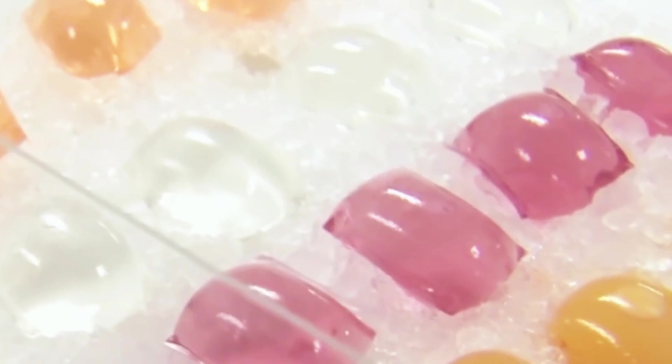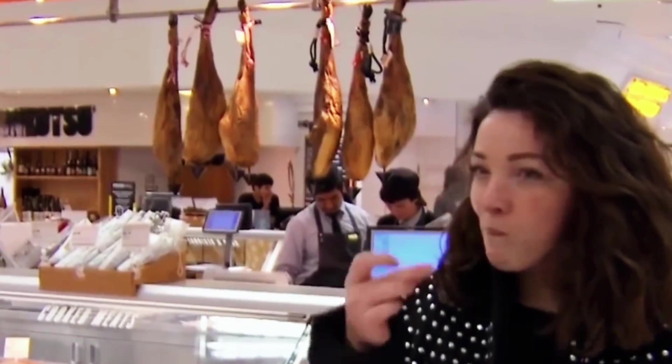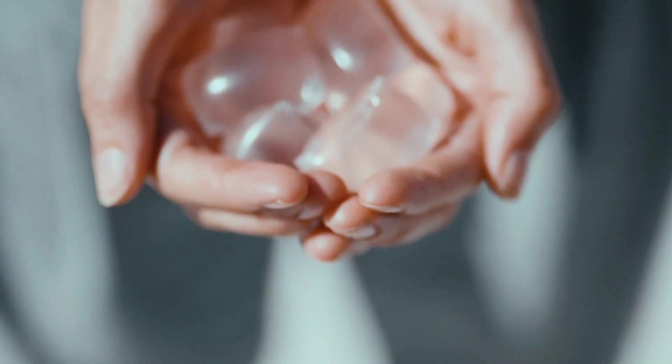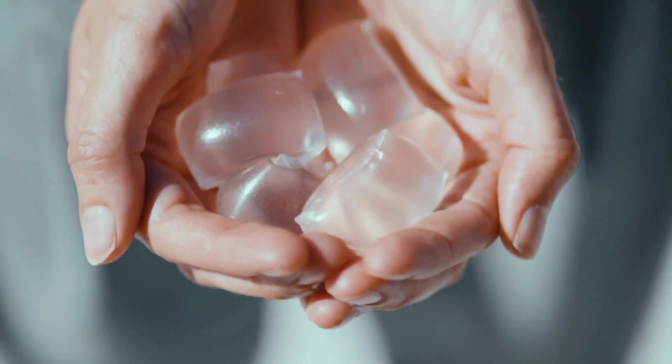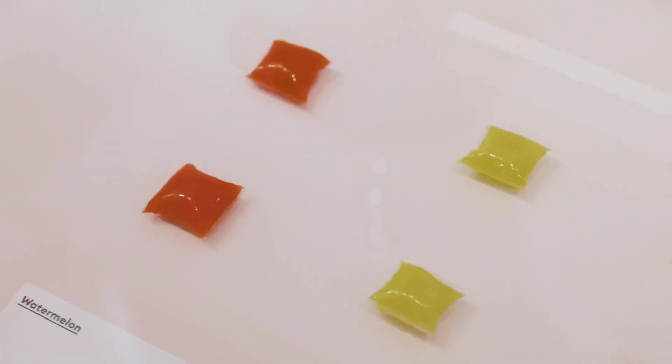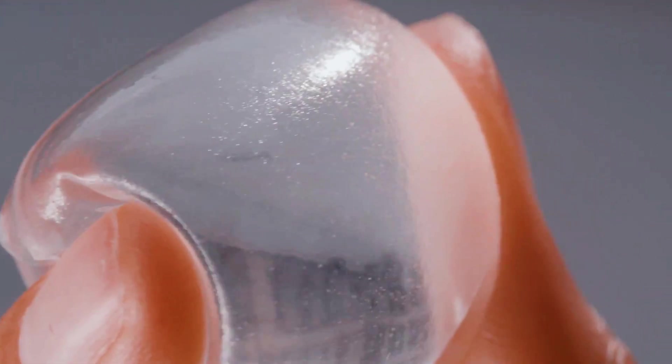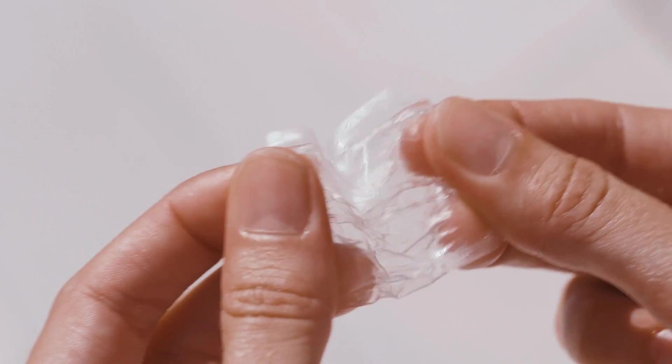A group of design students in London produced the Uho prototype in 2014. Rodrigo Garcia Gonzalez and Pierre Yves Paslier co-founded Skipping Rock's lab not long after. The procedure is straightforward. All you have to do is combine sodium alginate and calcium chloride until you have a gelatinous membrane that encapsulates water or any other liquid.